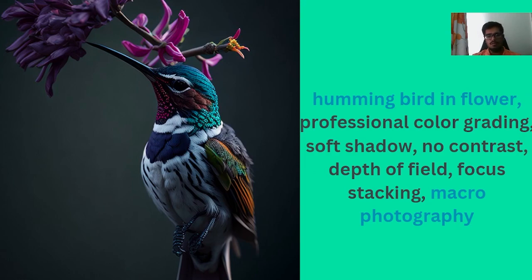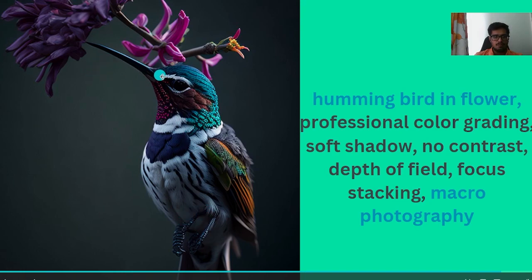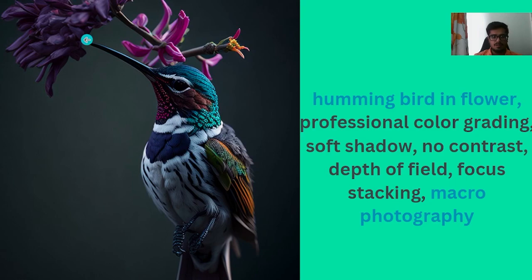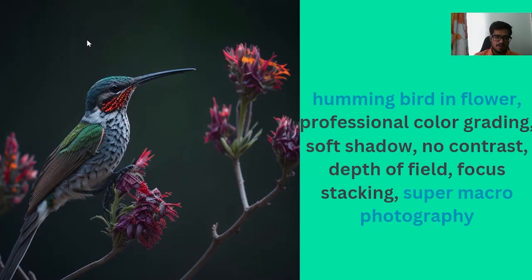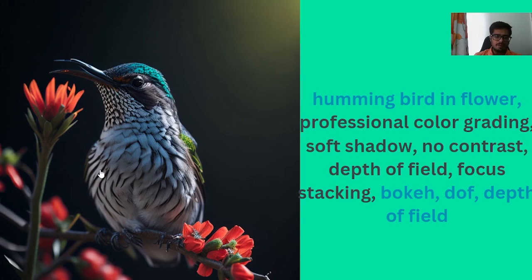Finally, let's look at macro photography. I prompted Leonardo to generate 'hummingbird and flower' with professional color grading, changing film photography to macro photography. While the generation isn't perfect — the feet aren't fully aligned — you can see how beautiful the image is, with the hummingbird nectaring from the flower. Switching to 'super macro photography' zooms in further with the flowers more clearly shown. Changing to 'bokeh depth of field effect' zooms in even deeper — you can even see the tongue of the hummingbird — and the generation remains hyper-realistic.